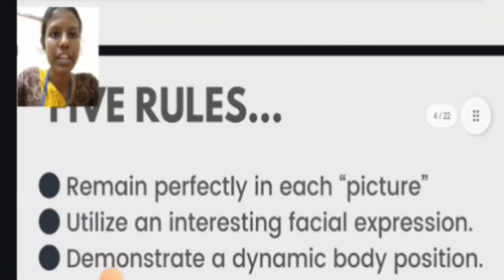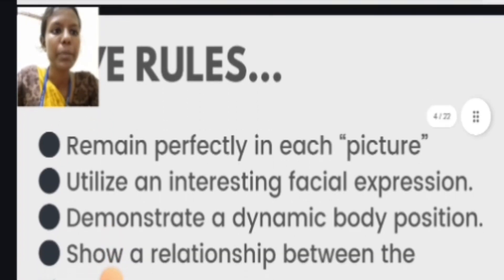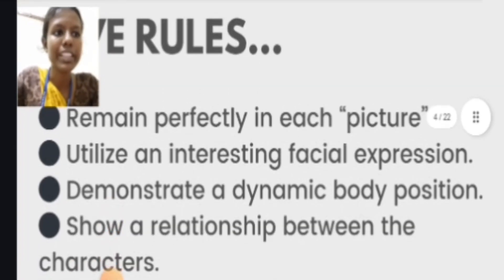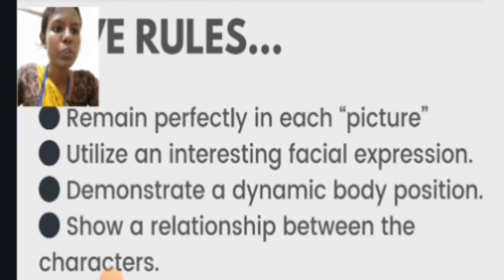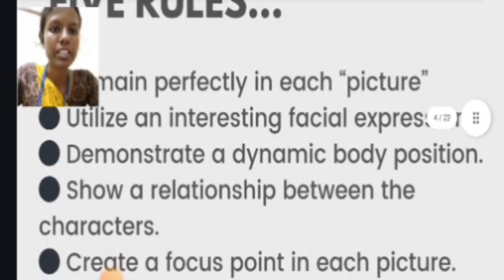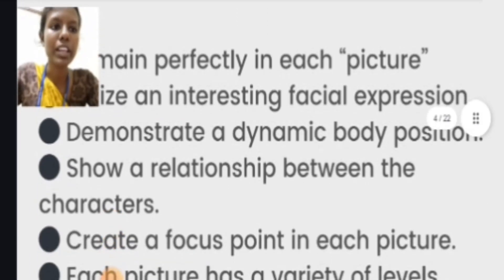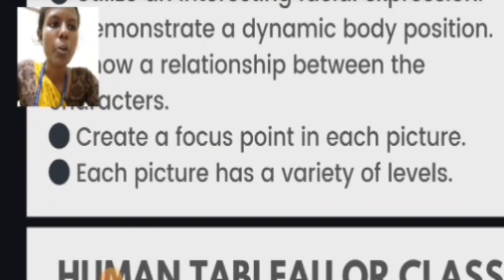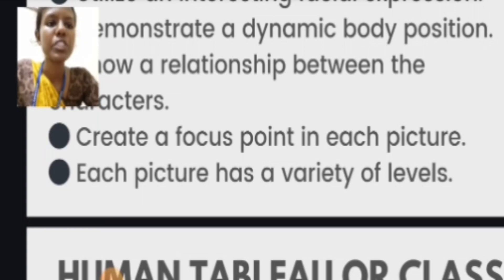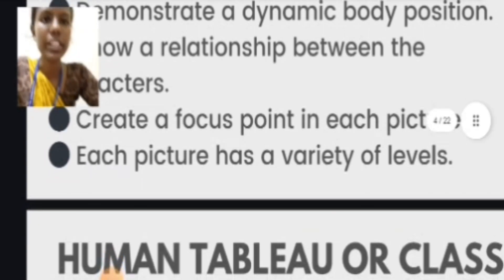Then we see the five rules of the human tableau. First, remain perfectly still in each picture. Then utilize an interesting facial expression. Then demonstrate a dynamic body position and show a relationship between the characters. Then create a focus point in each picture. Each picture also has a variety of levels.